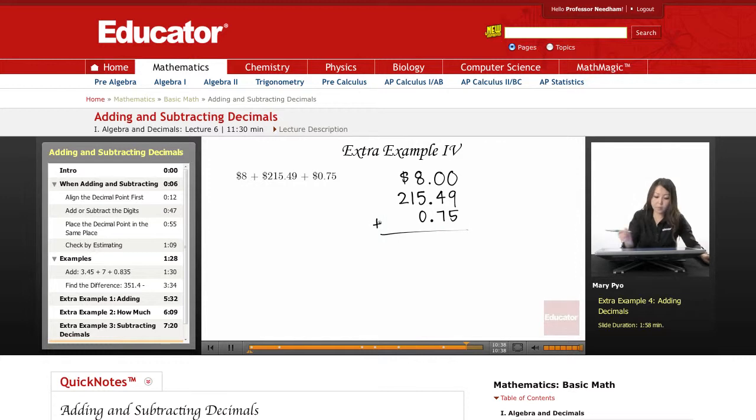I'm going to add these all up together. So 9 plus 5 is 14. So 1 plus 4 is 5. 5 plus 7 is 12.